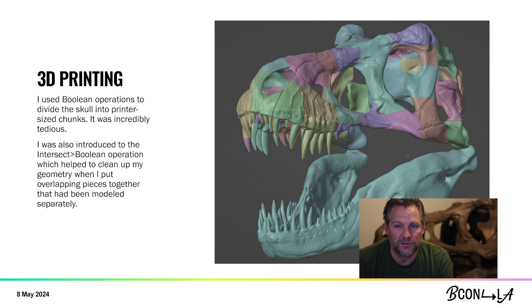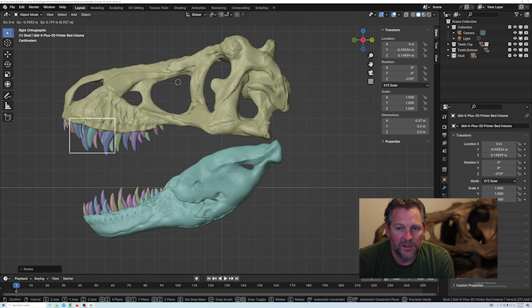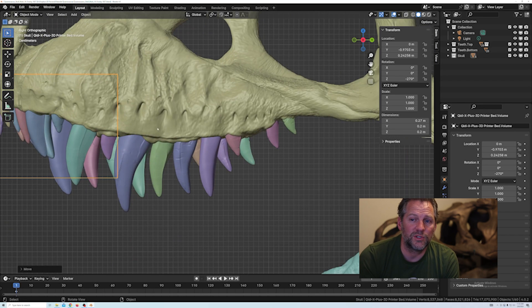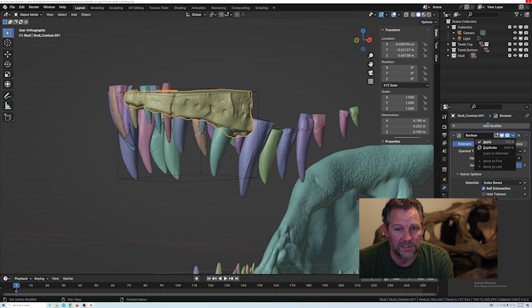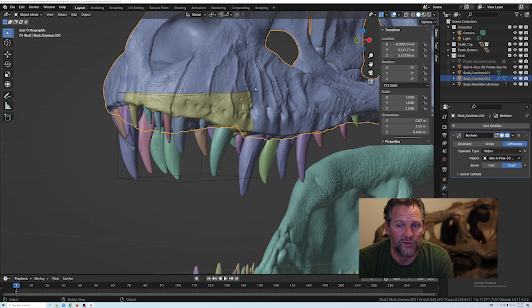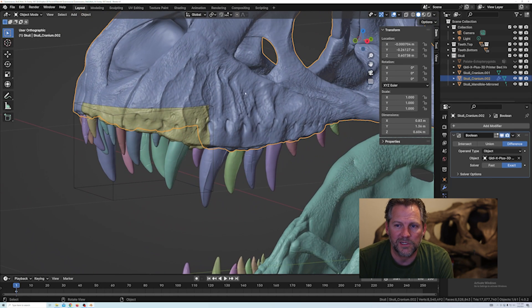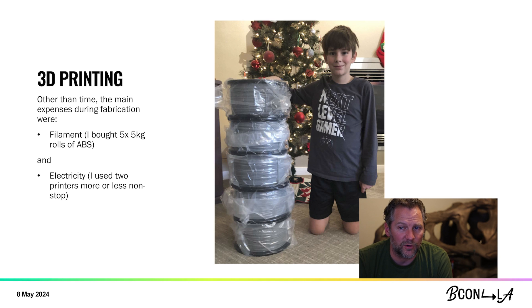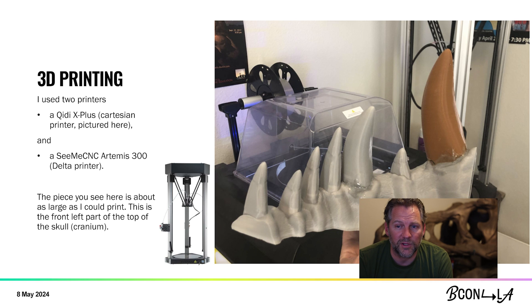3D printing offered solutions to those problems, and also came with a new set of challenges. A print this large requires either a very large printer or a lot of small prints. In my case, the latter was my only option. So I created a cube slightly smaller than my maximum printable volume, and used that cube to inform Boolean operations to divide the skull into 93 pieces. I calculated that the cost of filament and printing at my university would be around $1,500, which for an art teacher is a bit prohibitive. However, I was able to buy my filament for home printing for around $500, and I estimate that I probably used about $100 in electricity. I was also able to inexpensively source two printers — one from a local surplus auction that needed minimal repair, and one came from a friend, broken, and just required ordering some replacement parts from the manufacturer. When I was done, I had two working printers with reasonably large build volumes for less than $300.